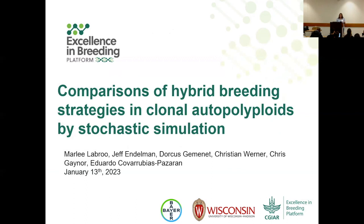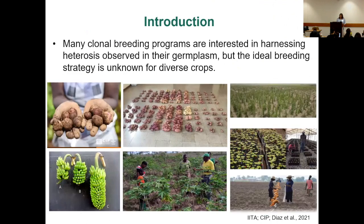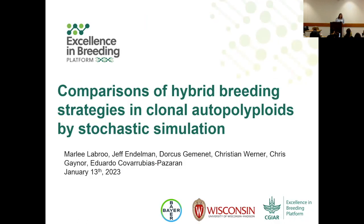Today I would like to discuss some comparisons of hybrid breeding strategies that we've done in clonal diploids and autopolyploids by stochastic simulation. I'm from the Excellence in Breeding Program of the CGIAR, and I'm presenting this on behalf of my colleagues from the University of Wisconsin, Jeff, and from Bayer: Chris Gaynor, Doris Sheminet, Christian Berner, and Eduardo Obrubias-Fissaron, who also worked on this project. This is my first time at this meeting, and I think I'm among friends.